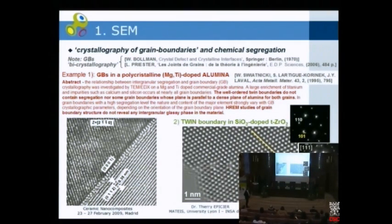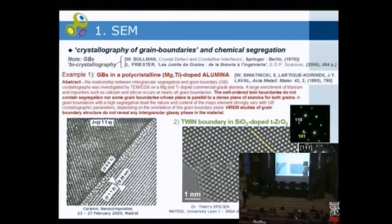This is a high-resolution image of a twin boundary in silica-doped zirconia. You see the symmetry shown by the mirror line — there is atomic matching because of coincidence between the two lattices, and there is no way to get any intergranular glassy phase because the energy is already at a minimum due to crystallography.